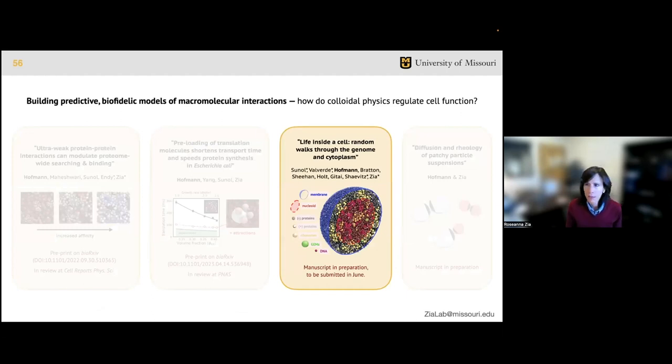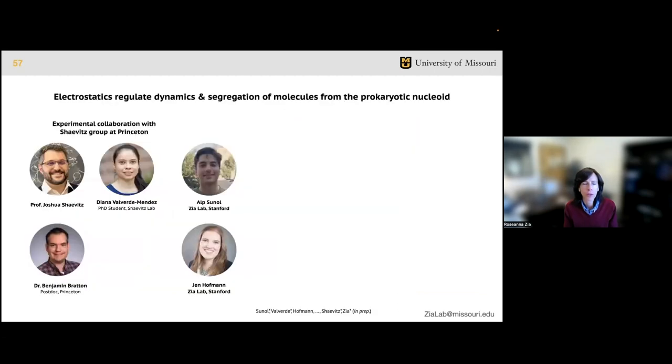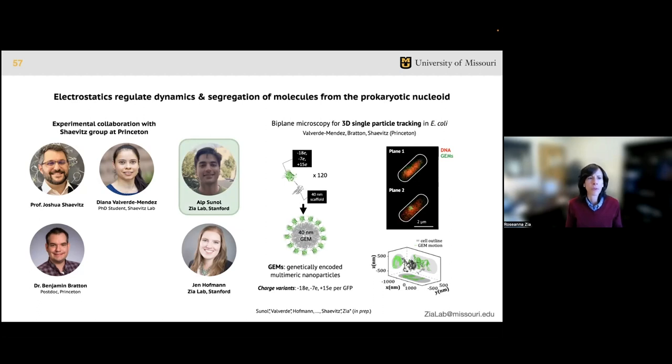I'm going to touch briefly on a third project which demonstrates how short-range molecular interactions can impact cellular organization and dynamics over much longer length scales. This work was conducted in close collaboration with Shevitz lab at Princeton, led by first authors Alp Sunal and Diana Valverde-Mendez. Alp has told the first full story of this project in some talks, but I'm going to focus here specifically on the part that would be most interesting to this group, which is the electrostatic interactions. The Shevitz group has developed methods to track the motion of individual particles inside E. coli in 3D, which is a really beautiful achievement. The particles they use called gems - genetically encoded multimeric nanoparticles - are fluorescent and are tunable by both size and charge.